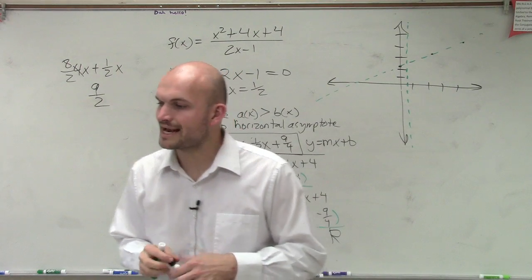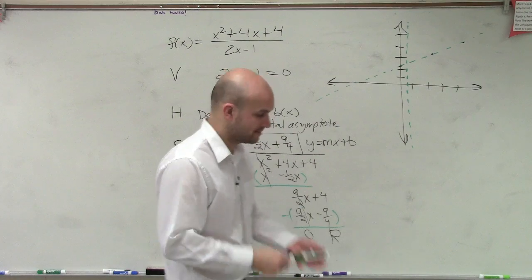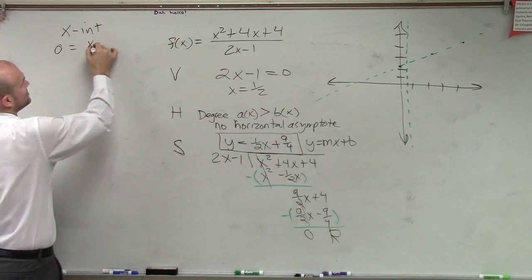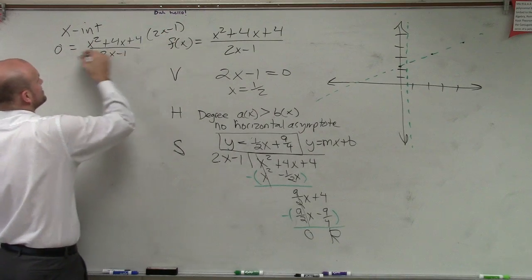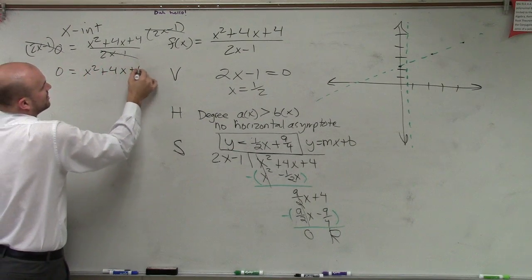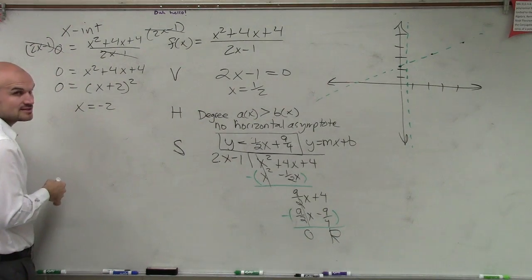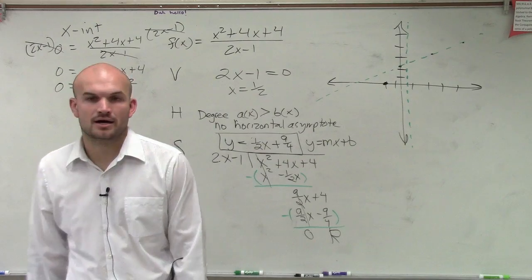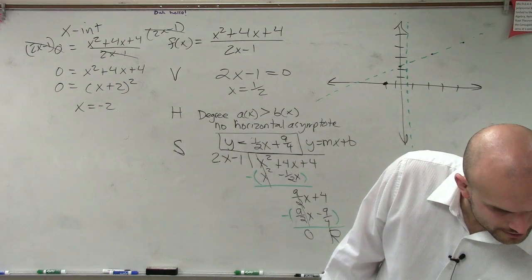So now we did the long division to find our slant asymptote. Now what we're simply going to do is still we need to find our x and y-intercepts. So let's do the x-intercept. x-intercept is when y equals 0. 0 equals x squared plus 4x plus 4 divided by 2x minus 1. Here we need to get this off the bottom, so we multiply 2x minus 1 on both sides. That goes to 0, that divides out to 1. So 0 equals x squared plus 4x plus 4. We can solve this one by factoring 0 equals x plus 2 squared. x equals negative 2. So we could say at negative 2, we have an intercept.